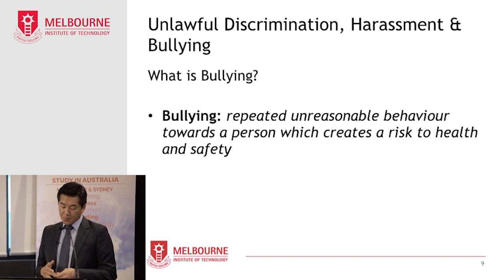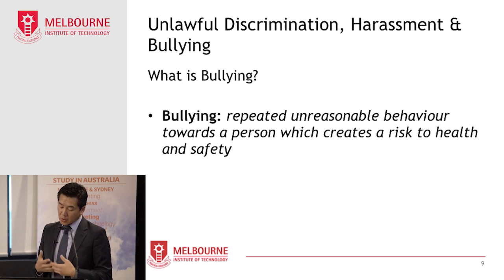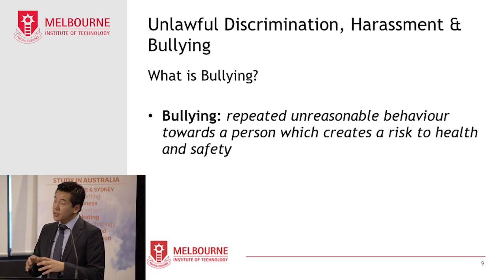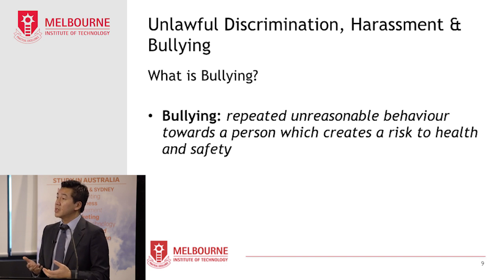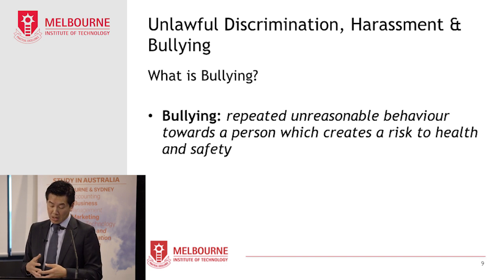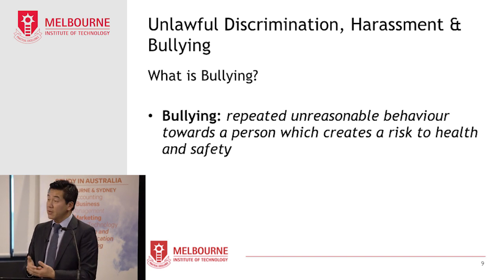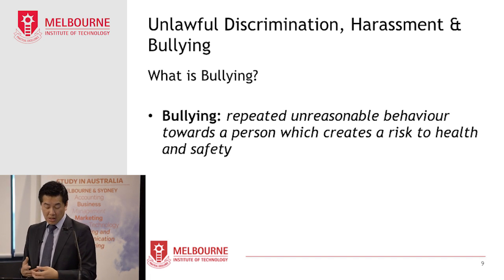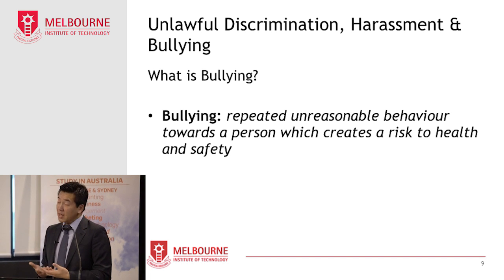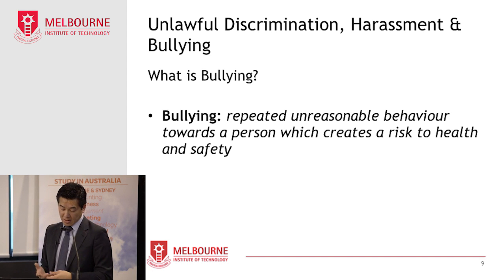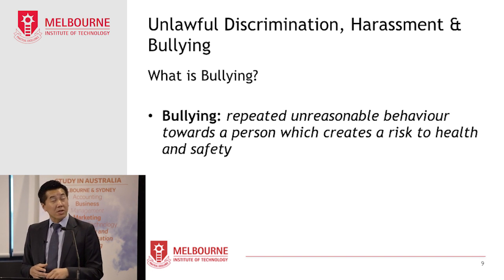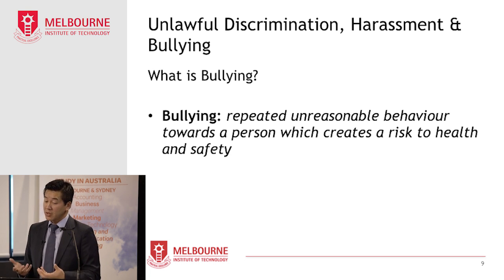Bullying is repeated unreasonable behaviour towards a person that creates a risk to health and safety. Typically, the bullying is linked to someone's personal characteristics, so bullying can also be seen as a form of discrimination. Bullying behaviour could include aggressive or intimidating conduct, yelling, screaming, offensive language, teasing, belittling or making humiliating comments. To amount to bullying, though, it's got to be repeated behaviour that's unreasonable and poses a risk to health and safety.